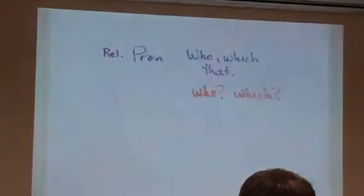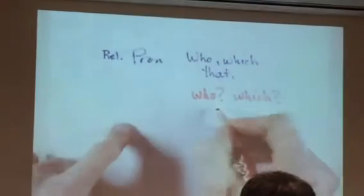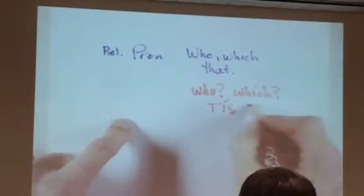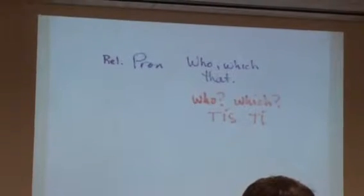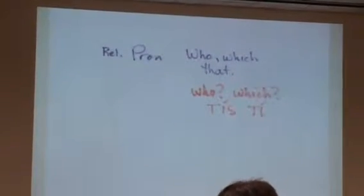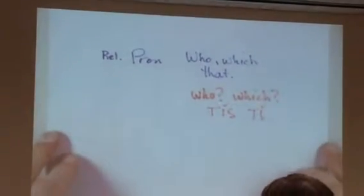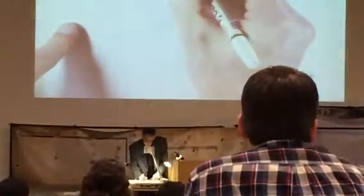Without the question mark, they are relative pronouns and they're introducing relative clauses. The who and which we learned as tis — with the accent mark. This is the interrogative pronoun in Greek, a third declension pronoun. As we work with who and which as the relative pronouns, we will see that they are a 2-1-2 pattern.